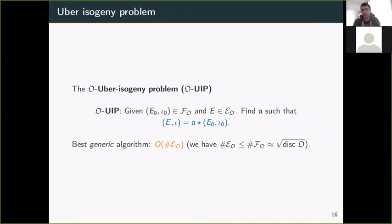The only generic property we have is that it's smaller than the set F_O, which is roughly equal to the class number, roughly equal to the square root of the discriminant. In most cases, it's conjectured to be exponentially hard, and this is why the hardness of the OUIP is what we call the uber isogeny assumption.